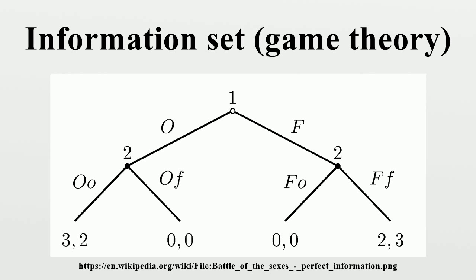The second game is also sequential, but the dotted line shows player two's information set. This is the common way to show that when player two moves, he or she is not aware of what player one did.